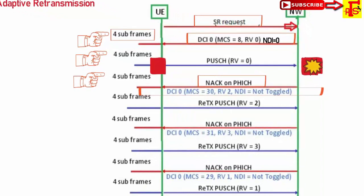RV is the redundancy version, and it always follows the sequence 0, 2, 3, 1. The 1st packet has RV 0; the 1st retransmission has RV 2; the 2nd retransmission has RV 3. It is the same packet but the version changes. The maximum retransmissions for the same packet is 4, with RV sequence 0, 2, 3, 1. The NDI bit is not toggled during retransmissions — as long as NDI is not toggled, no new data is sent. Only when NDI toggles from 0 to 1 does the UE transmit a new packet.